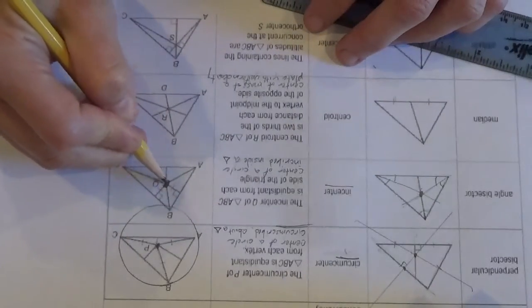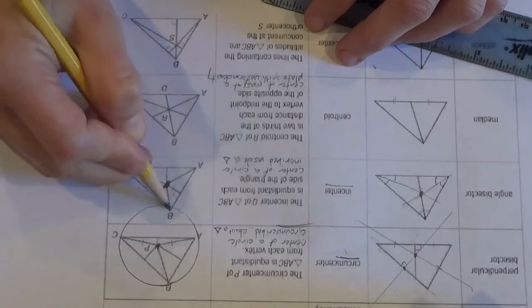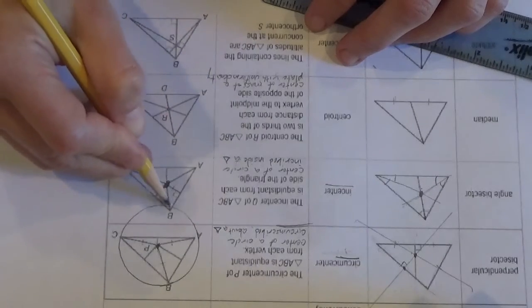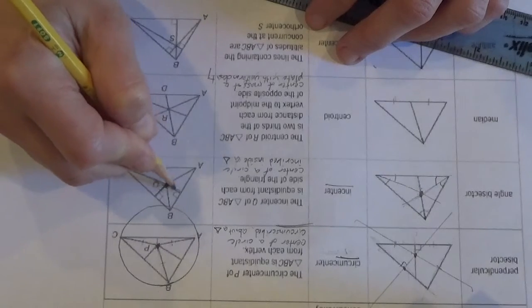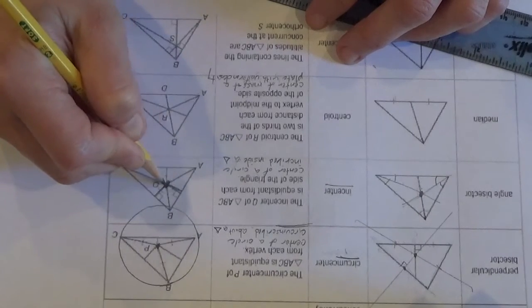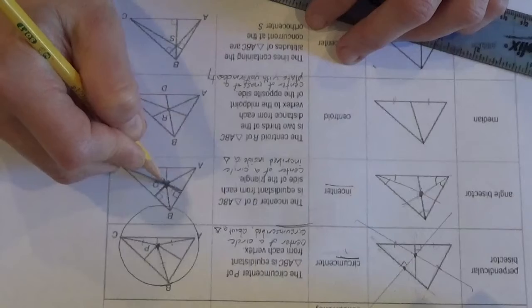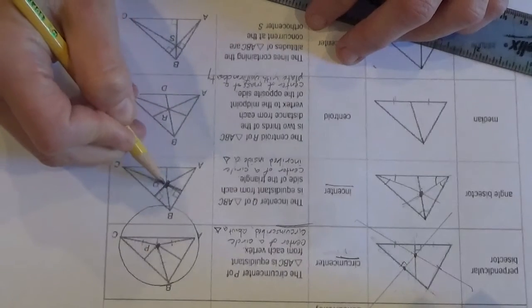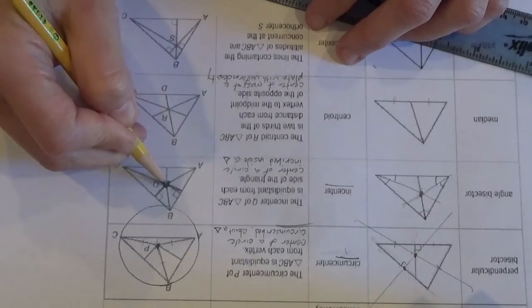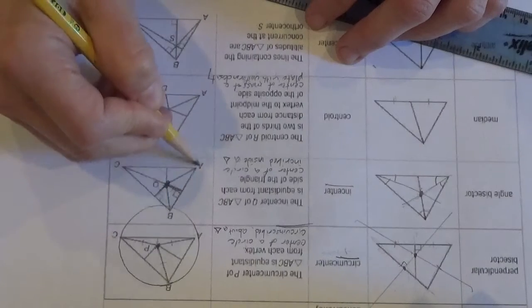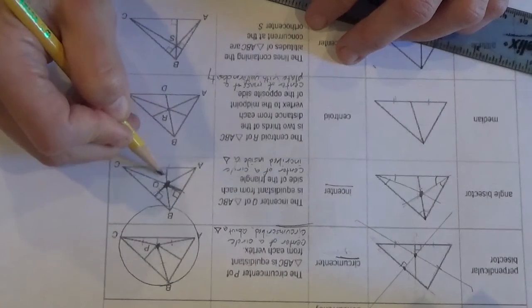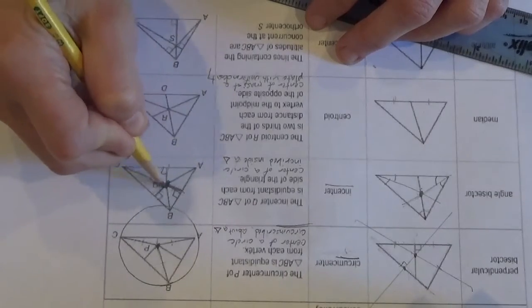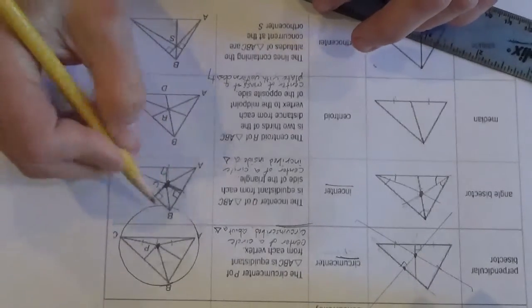And this point isn't equidistant from all the vertices, right? We can tell that this distance is longer than that distance, but it's equidistant from all the sides. So if you were to draw a little, go perpendicular, because if I want to measure the distance from the center, from that point to this side, I want to go straight to it, I want to make a perpendicular with it. So if you do that to all the sides, those are all the same length, and thus...